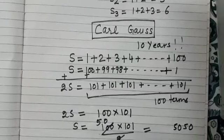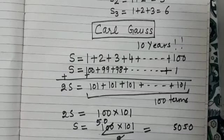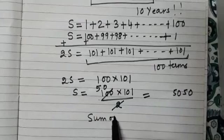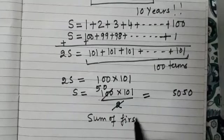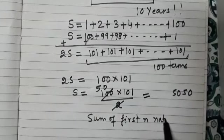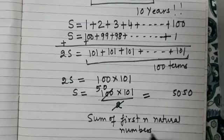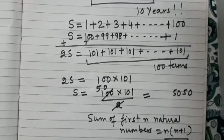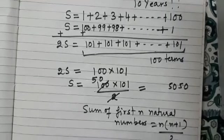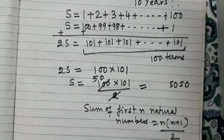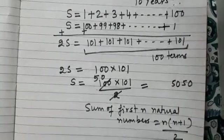And you get 5050. And quickly he answered and the teacher was surprised. And this later on got converted into an interesting formula, which we say that sum of first n natural numbers is given by n into n plus 1 divided by 2. You can see the derivation using the same trick, which Carl Gauss used.